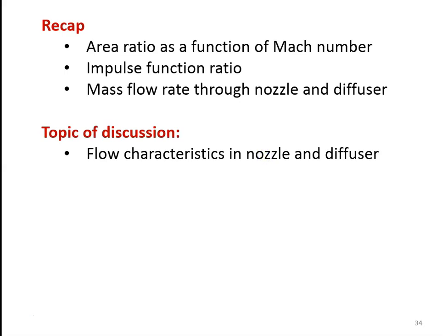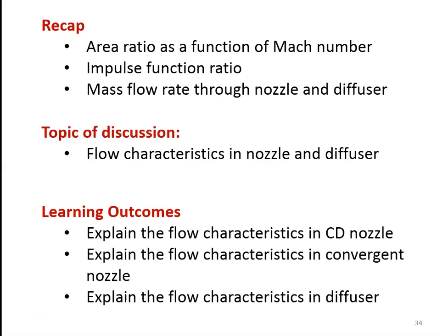In the earlier lecture, we discussed the area as a function of Mach number, impulse function ratio, and mass flow rate through nozzle and diffuser in isentropic flow. In this lecture, we are going to discuss the flow characteristics in nozzle and diffuser. The learning outcome: at the end of the lecture, the student will be able to explain the flow characteristics in a CD nozzle (Convergent Divergent Nozzle), in the Convergent Nozzle, and in the diffuser.